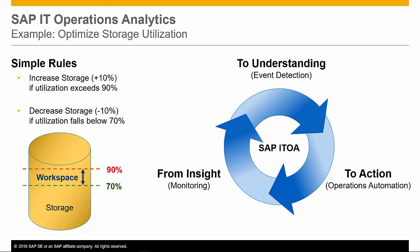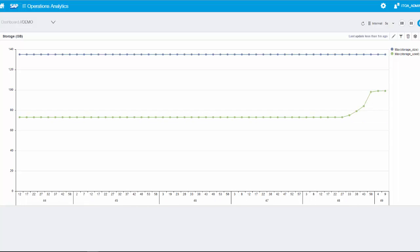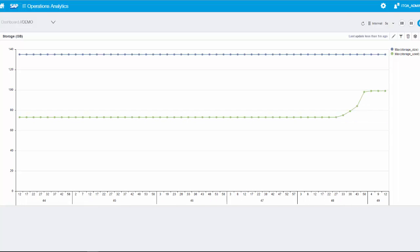In this demo, the storage will be increased automatically if the threshold of used storage exceeds 90%. It also decreases storage if the threshold falls below 70%. This chart displays the storage size as the blue line, and the used storage as the green line.